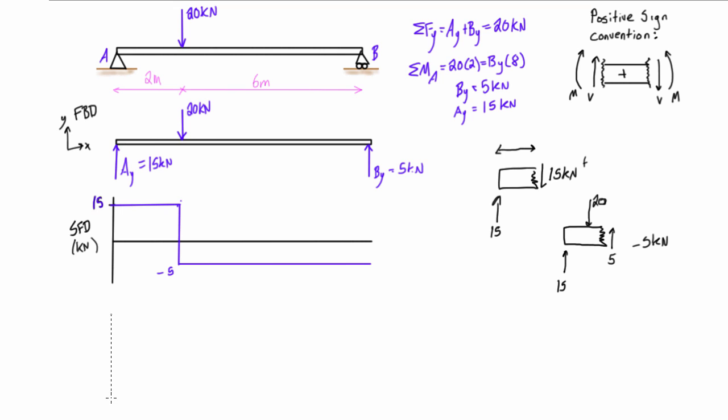Alright now for our bending moment diagram we're going to do the same thing by setting it up below our free body diagram so we have everything nice and in a row. So this is our bending moment diagram BMD and this is in units of kilonewton meters.